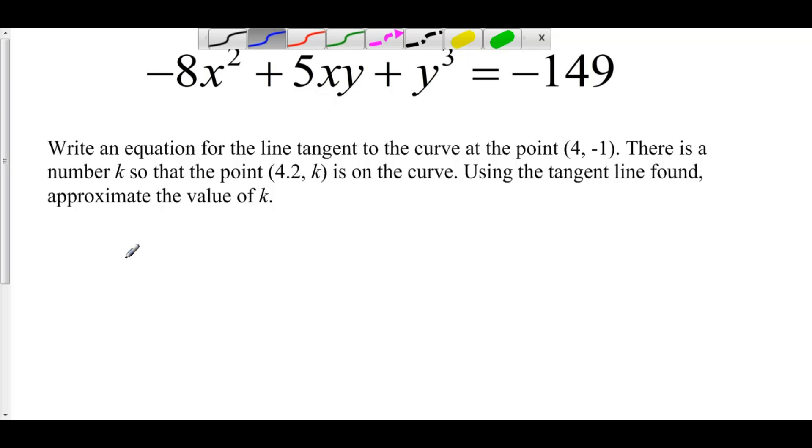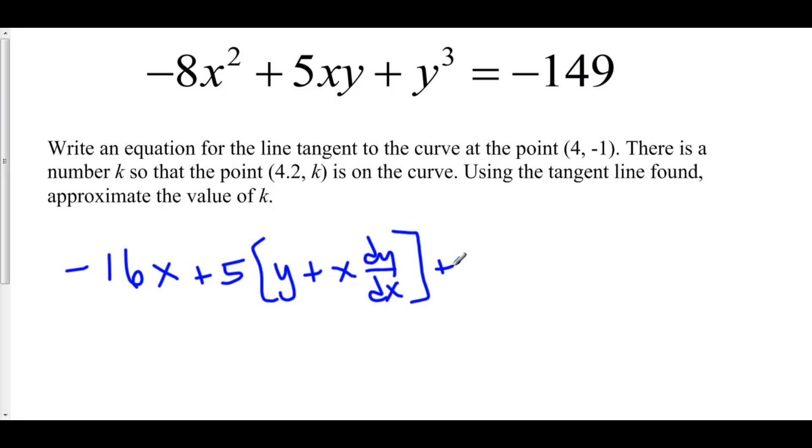So let's do this. We've got negative 16x plus 5. We have to use product rule here. The derivative of the first is 1 times the second is y. Plus the first x times the derivative of the second is dy over dx. Plus 3y squared times dy over dx.